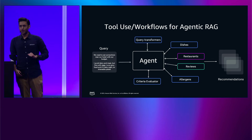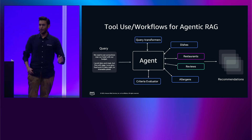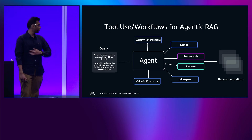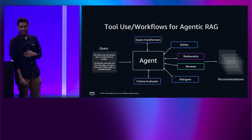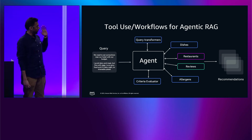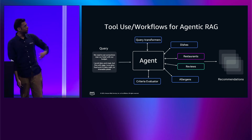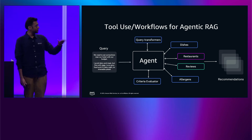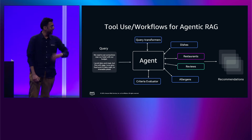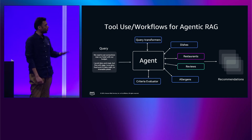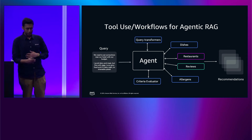The primary architecture we're going to discuss is the tool use workflow architecture — easy to implement with agentic RAG. For a query like "we need to eat somewhere near our hotel within our budget, I avoid dairy and meat but I'm fine with eggs, I love spicy food and it's date night so we need shareable plates" — an agent might take that query, access tools like query transformation procedures, criteria evaluation, and databases for dishes, restaurants, allergies, known allergens, and reviews, then serve a pattern of recommendations. The agent decides what tools to use and when, making it particularly flexible.